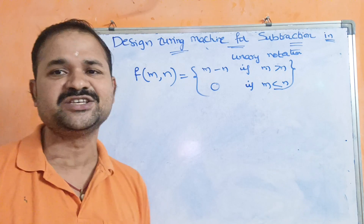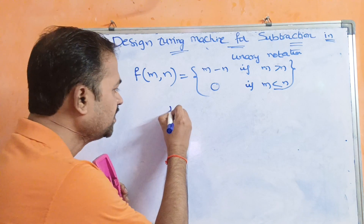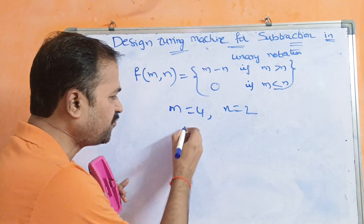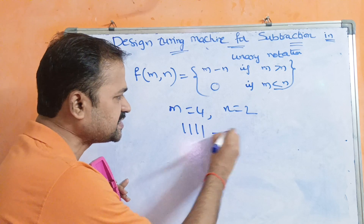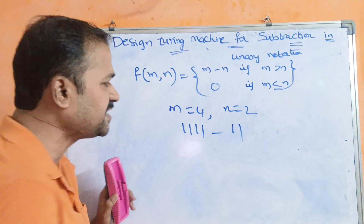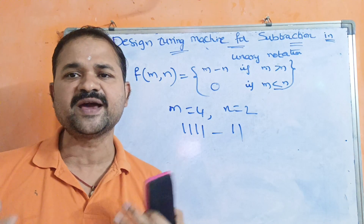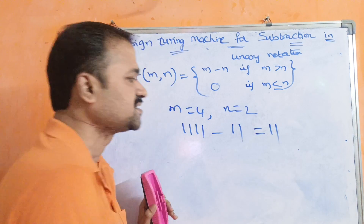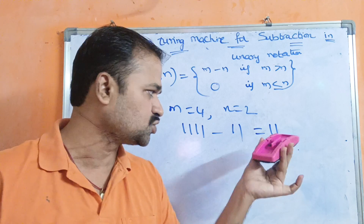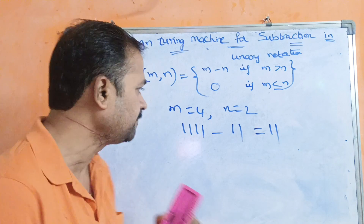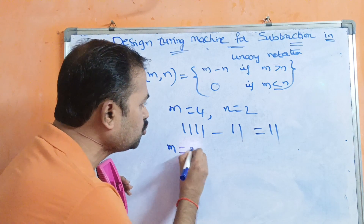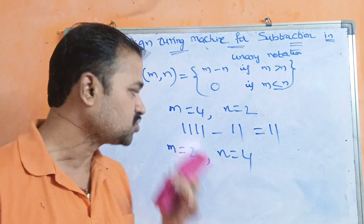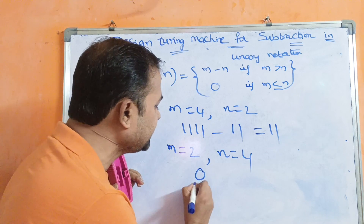Take the example where m equals 4 and n equals 2. m is represented by four ones and n by two ones. Four ones minus two ones gives a result of 2, so the output is two ones. Now if m equals 2 and n equals 4, since m is less than or equal to n, the result is zero.